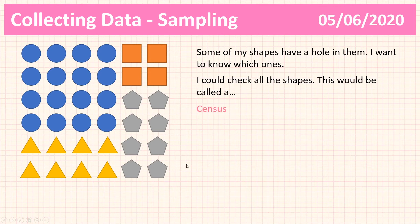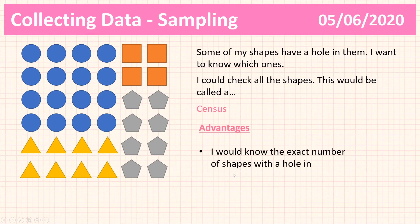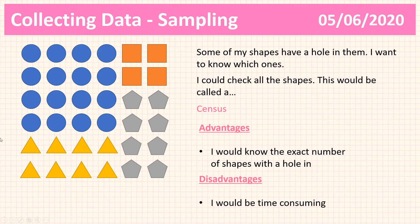The advantage of taking a census is I would know the exact number of shapes with holes in them — there would be no doubt because I would have counted and looked at every single shape. The disadvantage is that it would be very time consuming. There are 36 shapes here, but what if there were 36,000 or 36 million shapes? Taking a census would be extremely difficult in those situations. That's where we would take a sample instead, and we're going to look at different types of sampling.